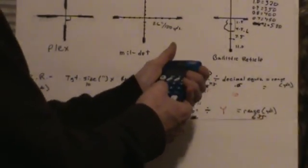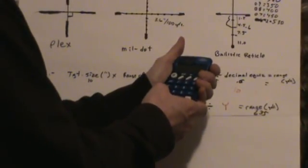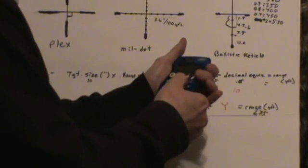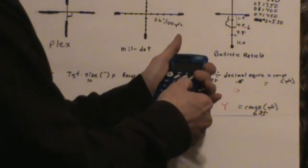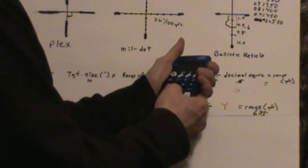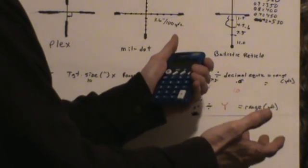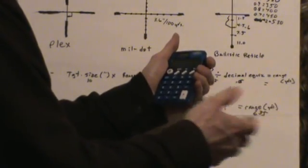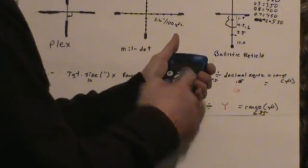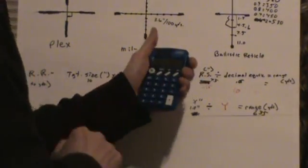So that means that second focal plane reticle subtension versus magnification is inversely proportional. So let's take a look at that real quick with our calculator. So that means that if we divide 10 by 16, and we multiply that times 3.6 inch per 100 yards, which is our mil dot calibration for 10 power, that means that 16 power goes down to 2.25 inch per 100 yards.